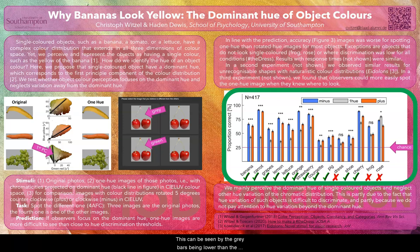We also obtained similar results in a second experiment in which we used unrecognizable shapes, and in a third experiment we showed that observers were able to identify the one-hue images when we showed them before what to look for, such as the stem in the case of the cherry.